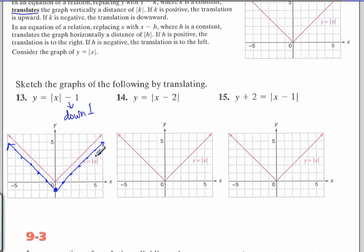The blue graph is the graph of absolute value of x minus 1. The red graph is y equals absolute value of x. If it was plus 2, it would be up 2. Minus 3, it would be down 3, and so on.